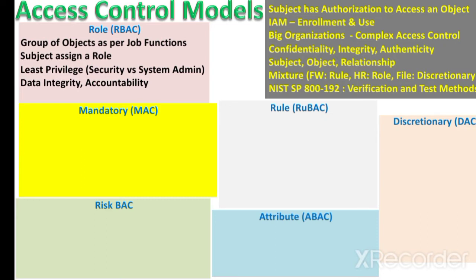Furthermore, the role-based access control model also ensures data integrity and accountability, and it reduces operation and maintenance. Since we group objects and assign a role rather than individual objects to each new subject, the subject can access all objects mapped to that role. This reduces the effort of managing subjects, roles, and objects.